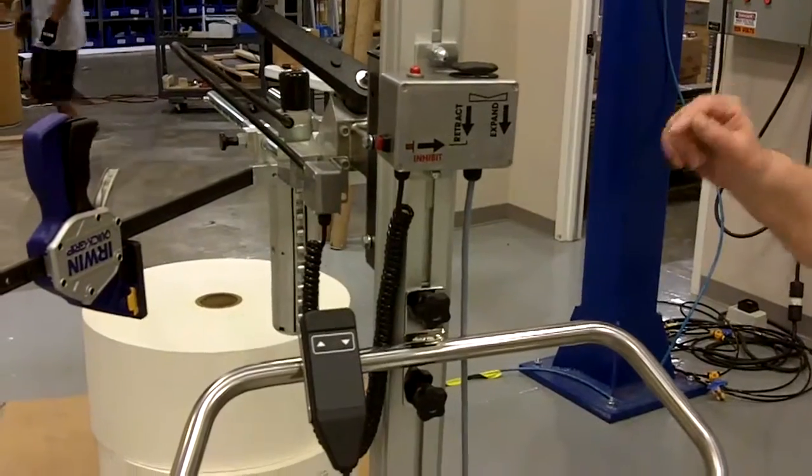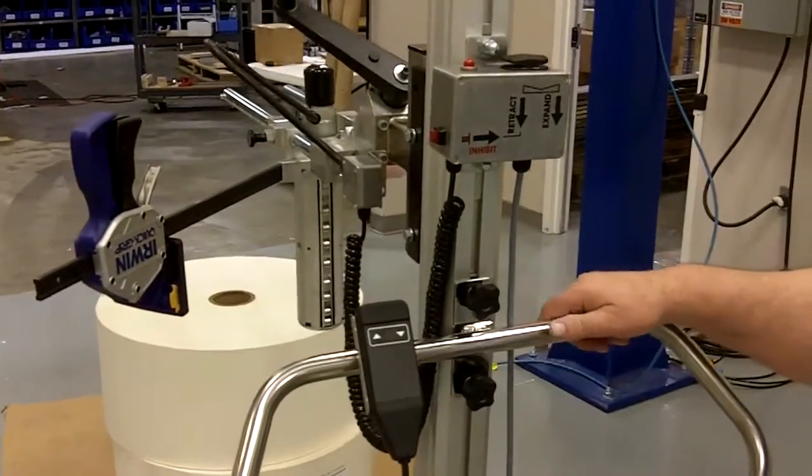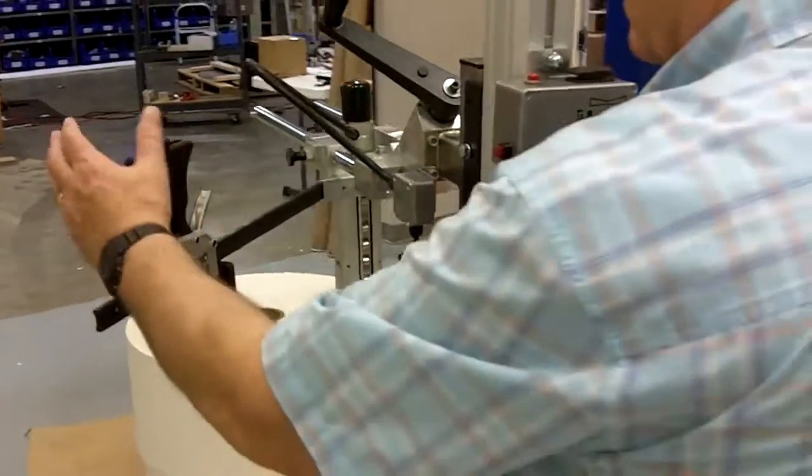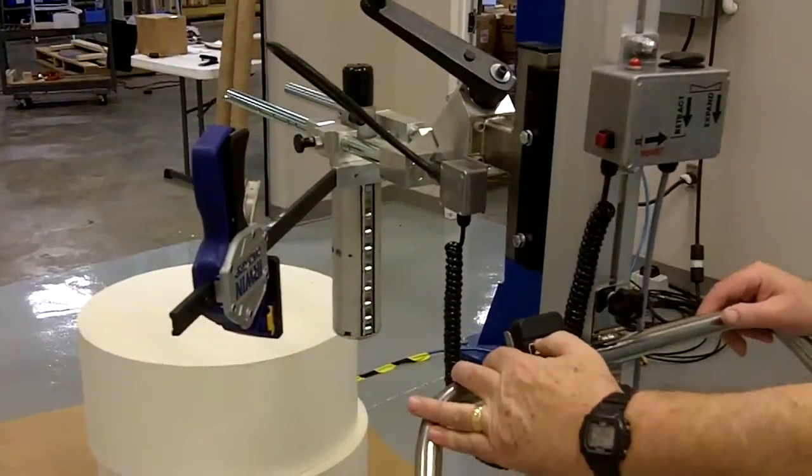Today we're demonstrating a 3 inch expando turn, picking up rolls that telescope. We have an anti-telescopic device here, the expand mechanism.